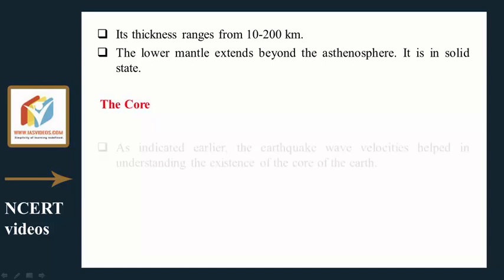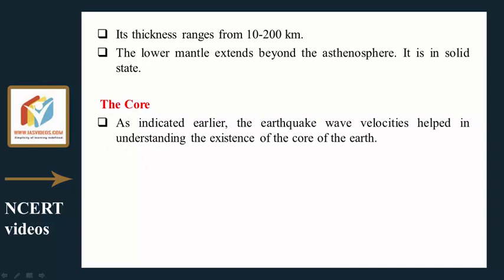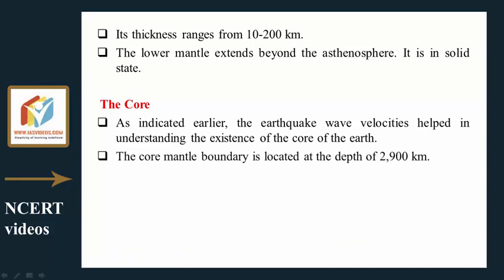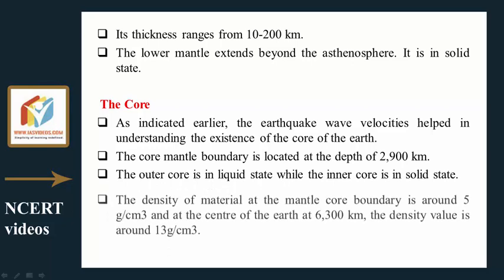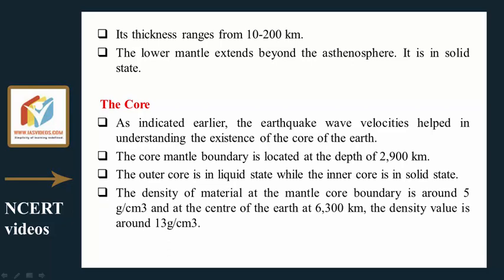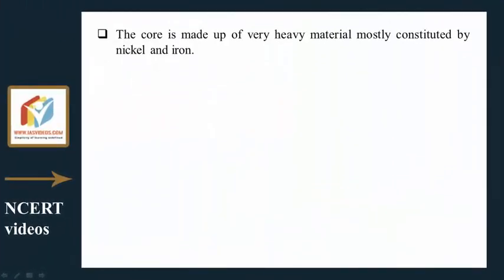The core: Earthquake wave velocities helped in understanding the existence of the earth's core. The core-mantle boundary is located at a depth of 2900 kilometers. The outer core is in liquid state while the inner core is in solid state. The density at the mantle-core boundary is around 5 g/cm³, and at the center of the earth at 6300 kilometers, the density is around 13 g/cm³.